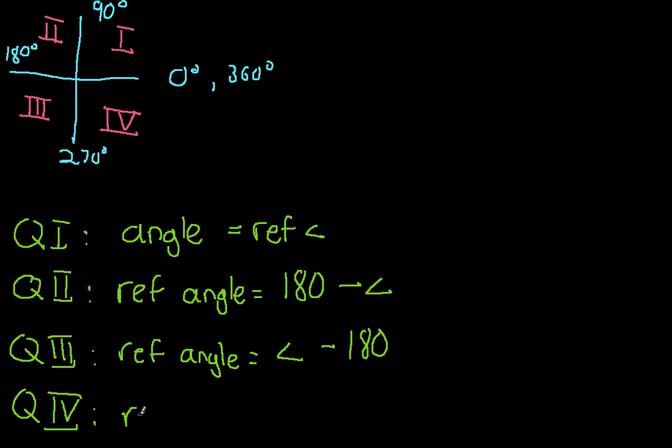And in quadrant 4, your reference angle is going to equal 360 minus your angle. Now, these rules only hold true if your angle, which I'm going to define as theta, is somewhere between 0 and 360, which will be most cases in your pre-calc class. So we'll get into more complicated types of problems in the next video. But for now, I want you to go ahead and write down these rules, and I want you to try to use these rules to solve the problems that I'm going to give you next.